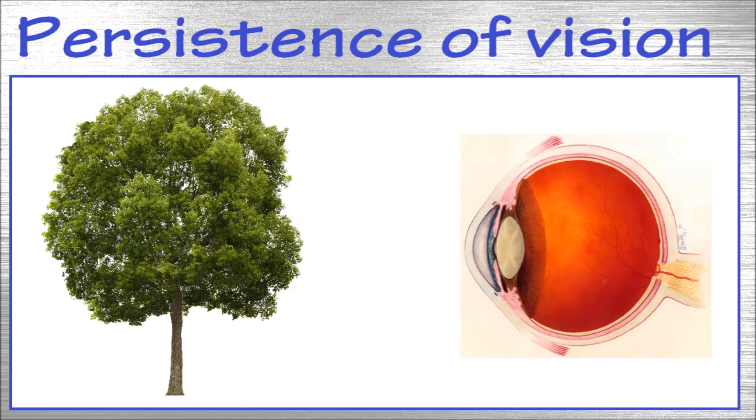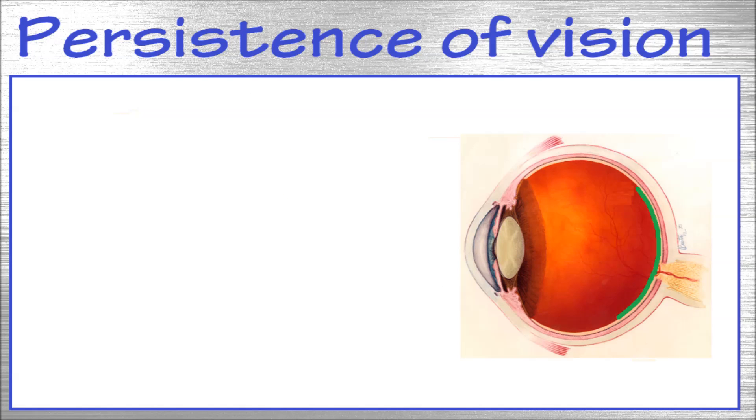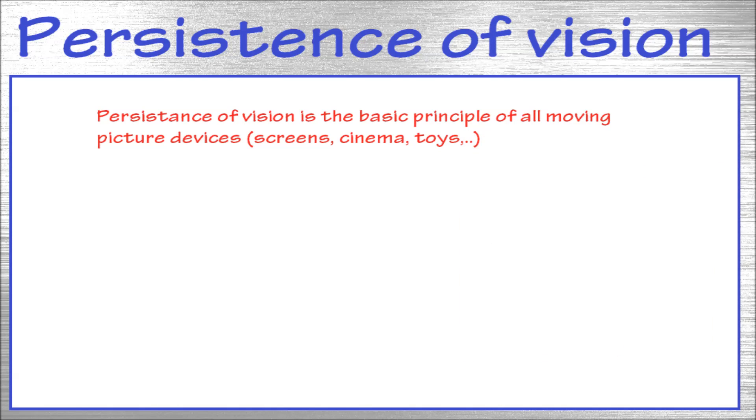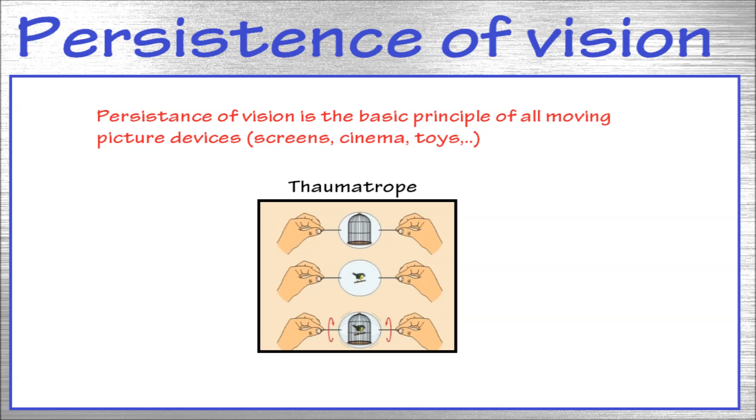As the light from an image falls on the eye, it is projected on the back. When the light source disappears, the image stays on the back of the eye for a small time. This is called the persistence of vision. When images change at a quick rate, the eye can't distinguish the separate images and blends them. This creates the illusion of movement.